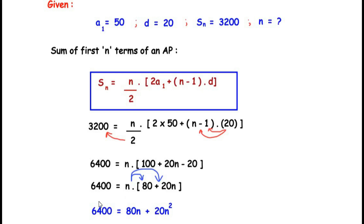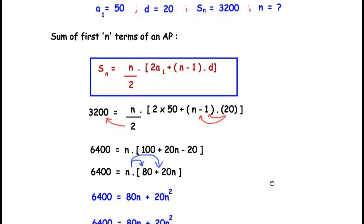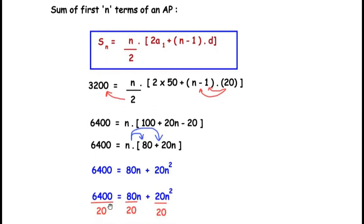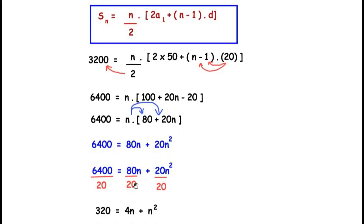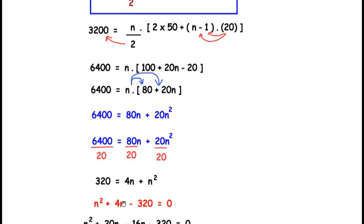Dividing each term by 20: 320 = 4n + n². Rearranging: n² + 4n − 320 = 0. We need to factorize this quadratic by finding two numbers that multiply to −320 and add to +4.